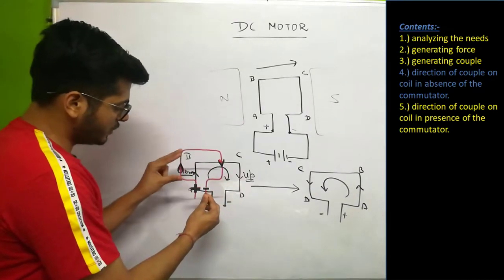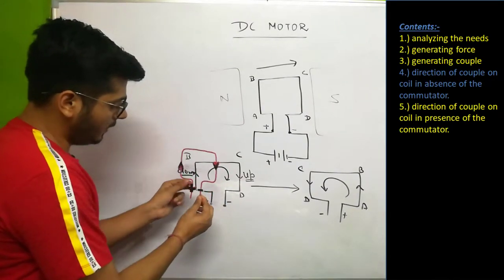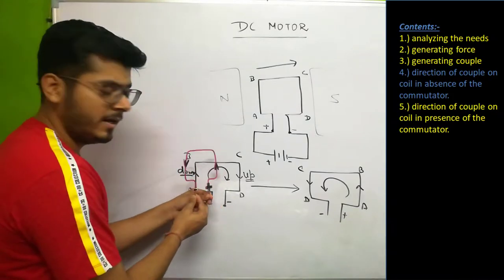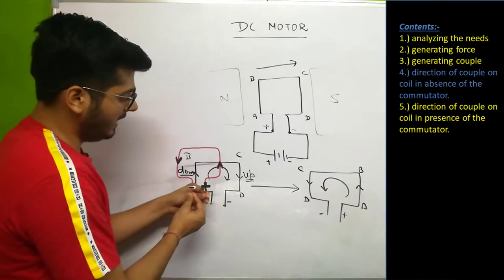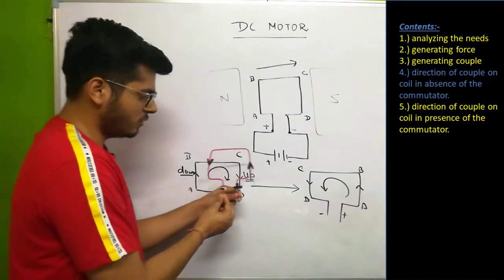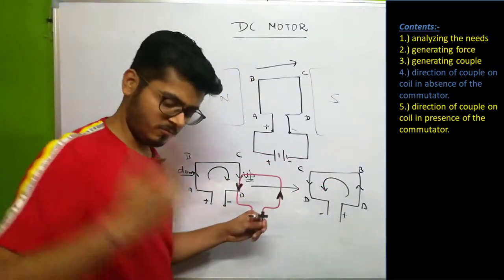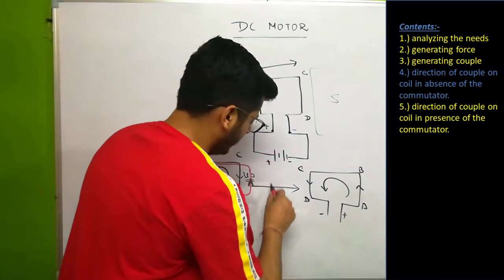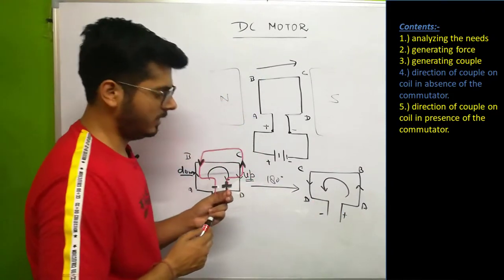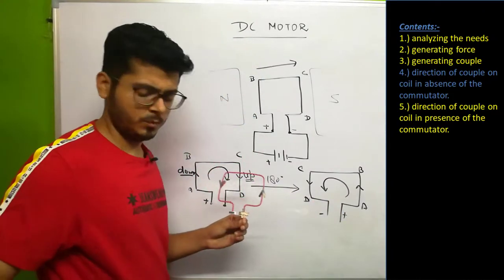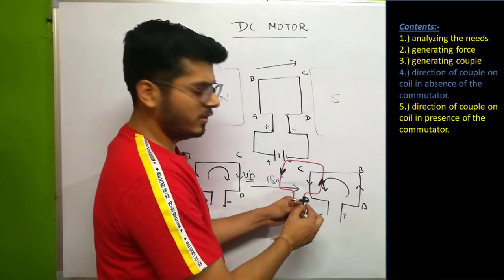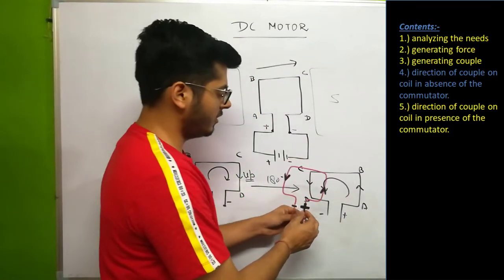The magnetic field is pushing the left side downward and the right side upward, so the coil tries to rotate in this particular manner. After 180 degrees of rotation, the coil reaches this position. Now the positive and negative ends have switched. What is the direction of forces on each side?